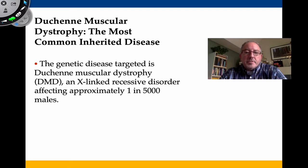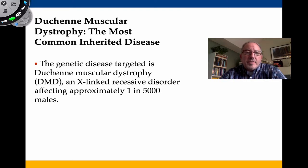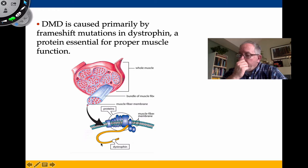Duchenne muscular dystrophy is one of the most common inherited diseases. It's an X-linked recessive disorder, affecting about one in every 5,000 males. It's primarily caused by a frameshift mutation in DNA that influences the dystrophin protein and therefore proper muscle function. Without functioning dystrophin, an individual experiences progressive muscle wasting until death at approximately 30 years of age. Despite decades of research and money invested, there's still no acceptable treatment.